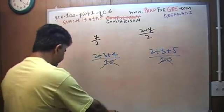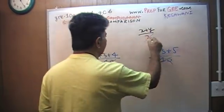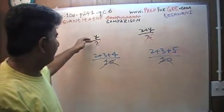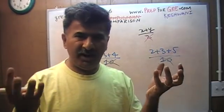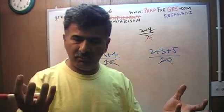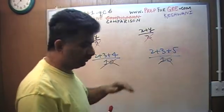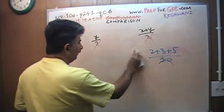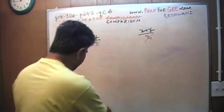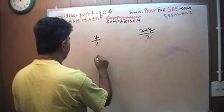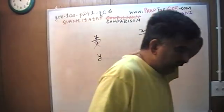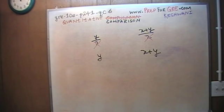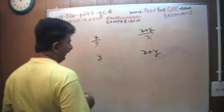Similarly here, this two plays no role, because when you divide this by two, you're looking at half of some quantity, comparing half of some quantity versus half of some other quantity. Why compare half of this versus half of that, when you can just as well compare the whole of this versus the whole of that? Two plays no role, so two is gone. So now I'm left with y versus x plus y.